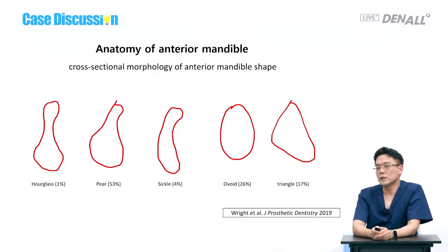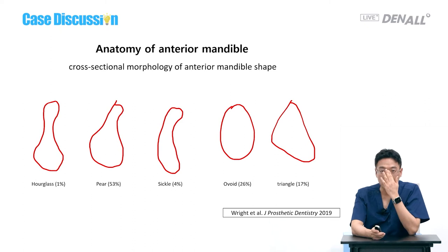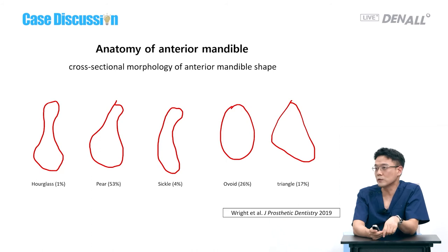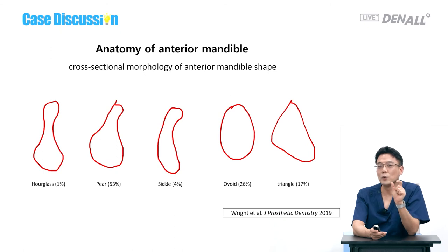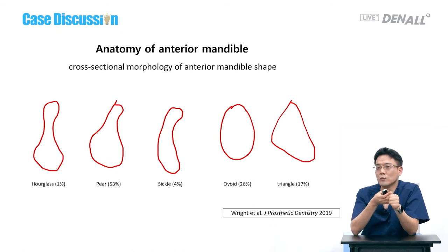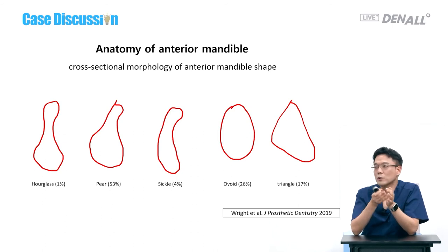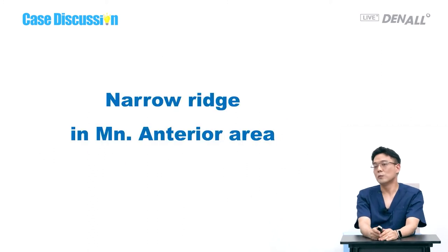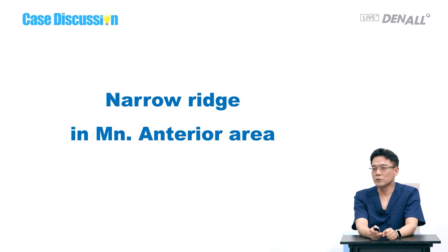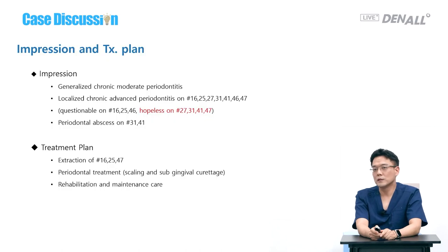I tell the residents that mandibular anterior is the most challenging area to treat in terms of the process to success. Here is the anatomy: the second type, pear shape, is most frequent. The hourglass is most frustrating — the top portion looks broad, but the middle part is narrow. It looks like a knife edge, so we need to form bone.